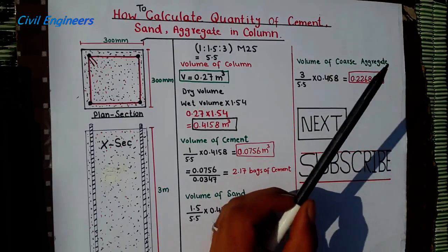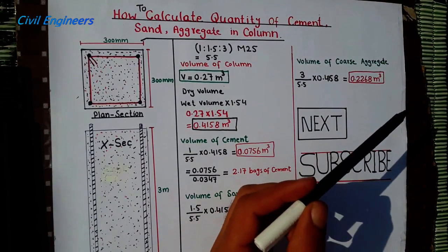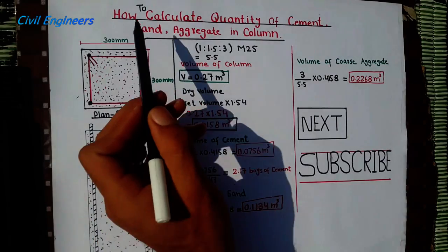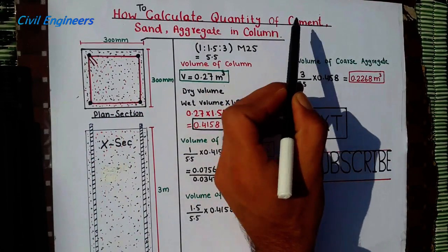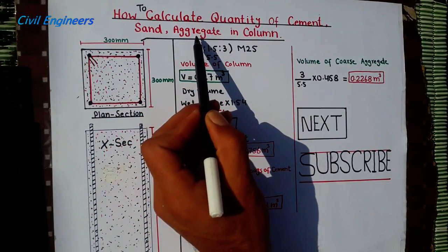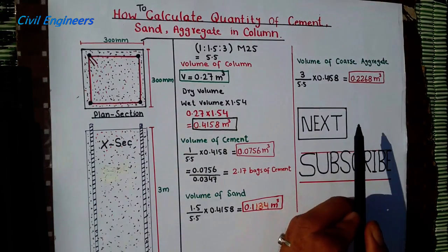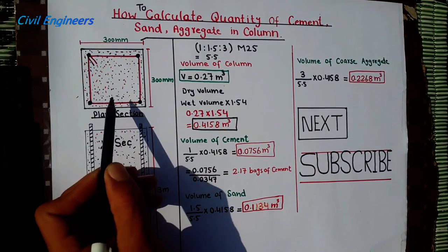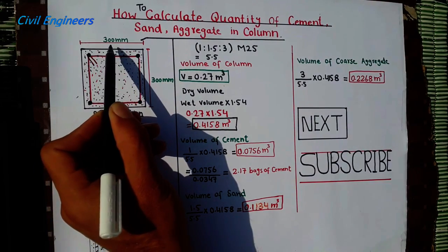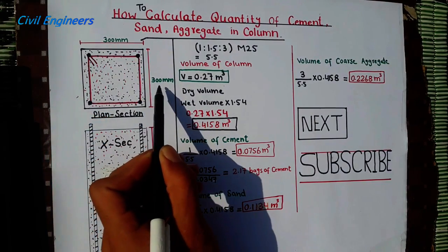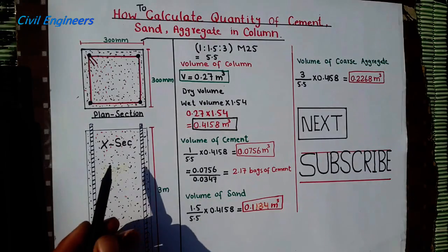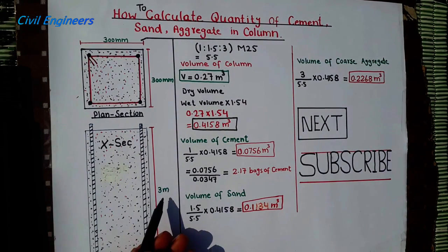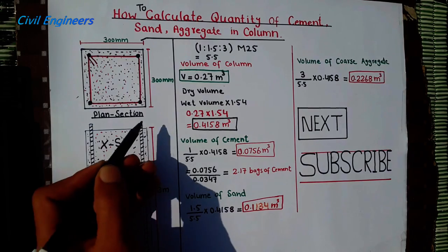Hello friends, welcome back with a new lecture. I'm Sami and today my topic is about how to calculate quantity of cement, sand, and aggregate for a column. This is the plan section for the column, which has dimensions of 300 mm by 300 mm. This is the cross section, and the height is 3 meters.